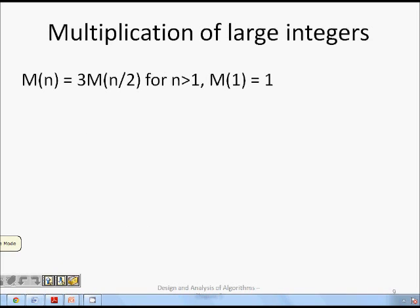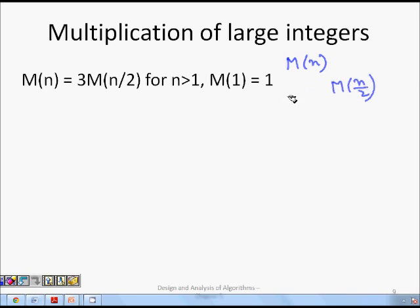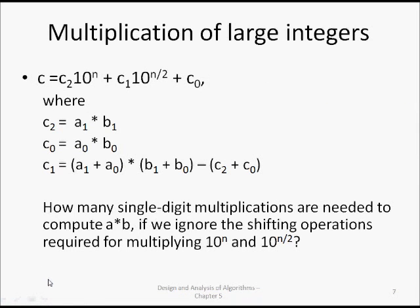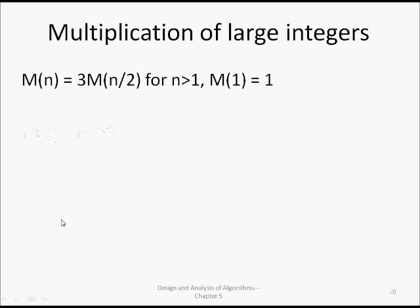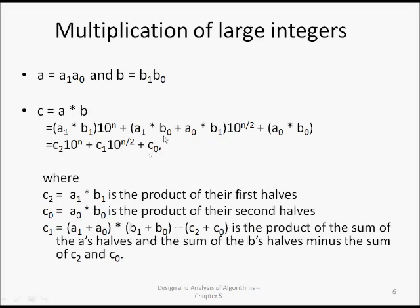So the recurrence becomes M(n) = 3×M(n/2), because M(n) is the work required to multiply two n-digit numbers, and M(n/2) is the work for two n/2-digit numbers. Originally we needed four such multiplications, but now we only need three.